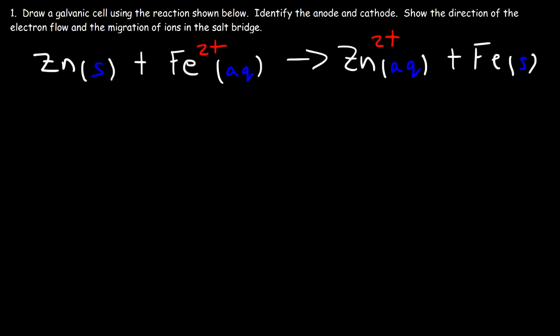In this video we're going to focus on drawing galvanic cells. How can we draw a galvanic cell based on the reaction shown below? We need to identify the anode, the cathode, and we have to show the direction of the electron flow and the migration of ions in the salt bridge.